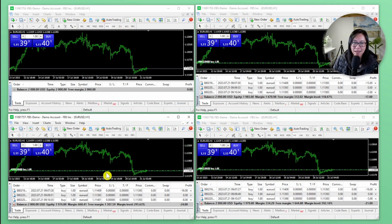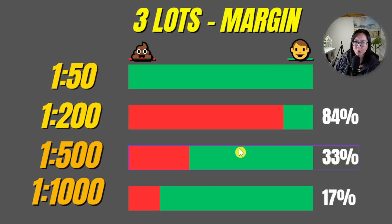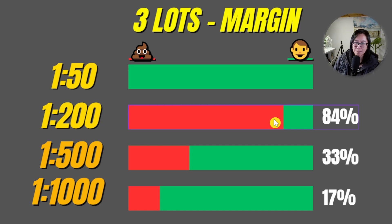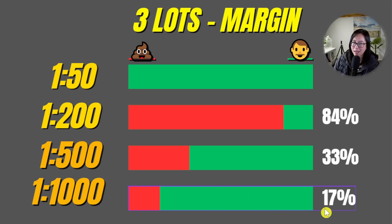One last example: three accounts with three lots each. The profit and loss is about the same across all of them, so leverage has not made an impact on profits and losses. On the diagram, for a three lot trade on a 1:200 leverage account, the broker has taken 84% of all the money and put it aside — meaning we won't be able to place any more trades. However, with the 1:1000 account, I can place many more trades because there's still a lot of free margin available.